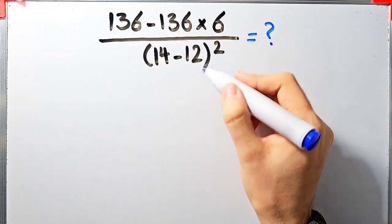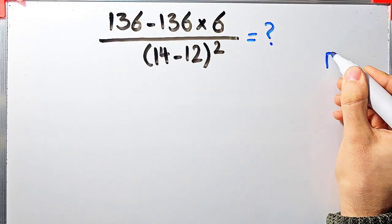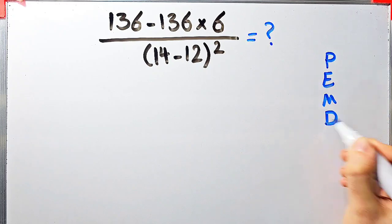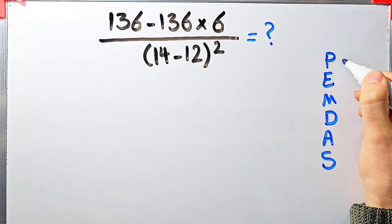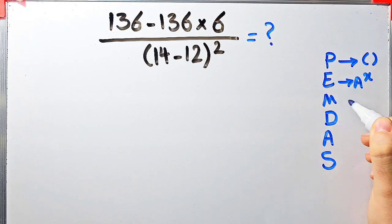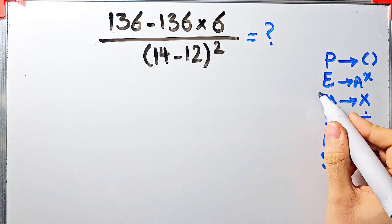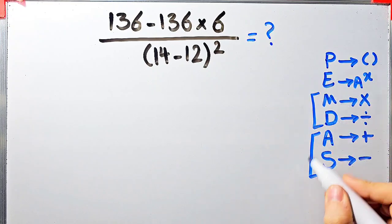In this question we have subtraction, multiplication, division, parentheses, and exponent. To solve this question we need to follow the order of operations, which is PEMDAS. PEMDAS shows the priority of mathematical operations — if you don't pay attention to this rule you get the wrong answer. P stands for parentheses, E for exponent, M for multiplication, D for division, A for addition, and S for subtraction. Multiplication and division have the same level of priority; addition and subtraction also have the same level of priority. When we have both in an expression, we start from the left.